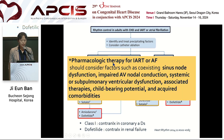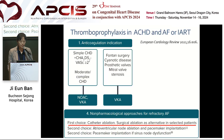Pharmacologic therapy should consider sinus node dysfunction, impaired AV nodal function, systemic or pulmonic ventricular dysfunction, associated therapy, child-bearing potential, and acquired comorbidity. Regarding thromboprophylaxis, patients with moderate to severe congenital heart disease or the presence of a prosthetic valve should receive long-term anticoagulation with vitamin K antagonist. Although the CHA2DS2-VASc score has not been fully validated for congenital heart disease, if the score is more than 2, anticoagulation is recommended.